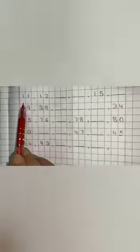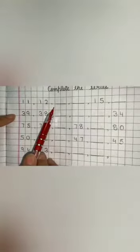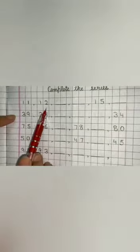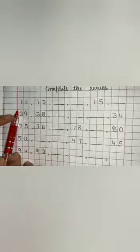But just see, when you have to do complete the series, the first step that you need to understand is that you have to see where the counting is going. Is it going in a forward direction or is it coming in a backward direction?